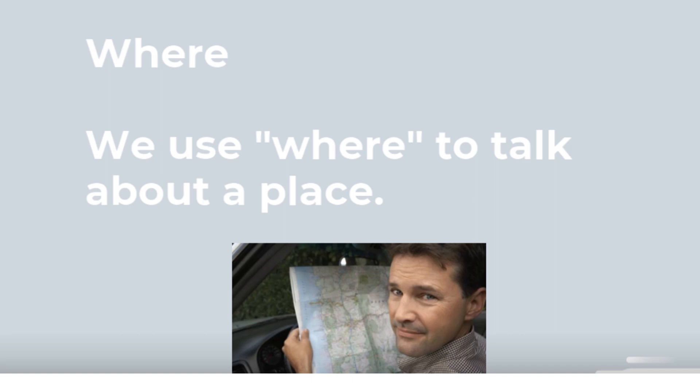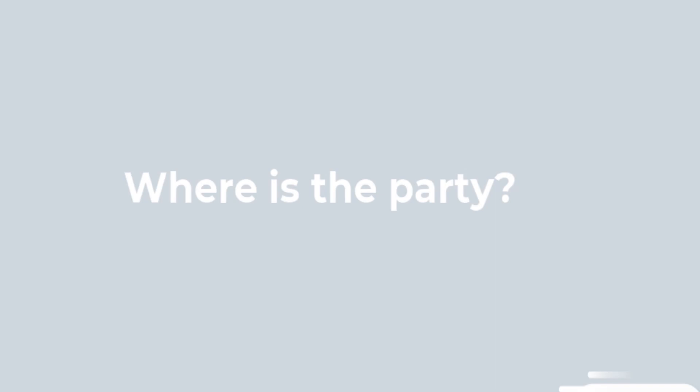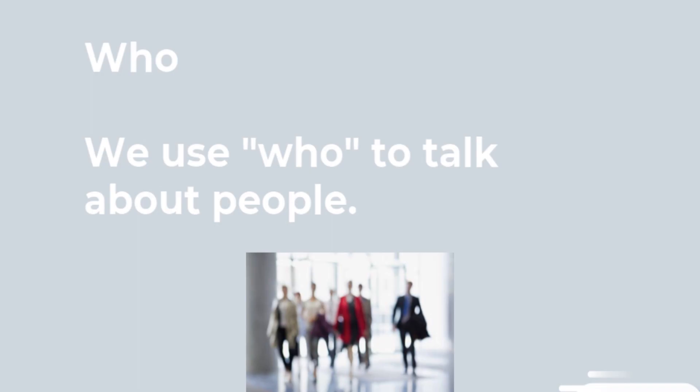The next word is 'where.' We use this word to ask about a place. For example: Where is the party? Finally, we have 'who.' We use this word to ask about people. For example: Who is having a birthday party?